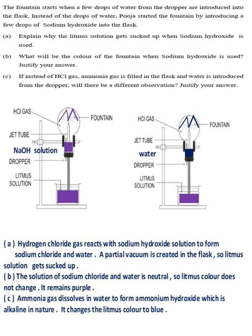Question 2, Part 1. A: Hydrogen chloride gas reacts with sodium hydroxide solution to form sodium chloride and water. A partial vacuum is created in the flask, so litmus solution gets sucked up. B: The solution of sodium chloride and water is neutral, so litmus color does not change, it remains purple. C: Ammonia gas dissolves in water to form ammonium hydroxide, which is alkaline in nature. It changes the litmus color to blue.